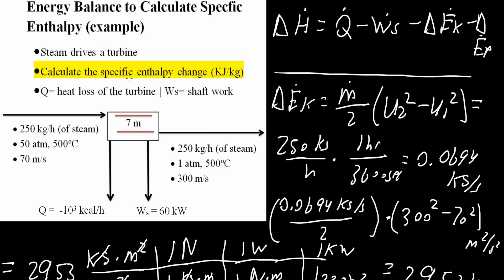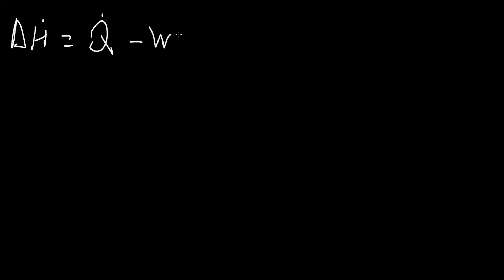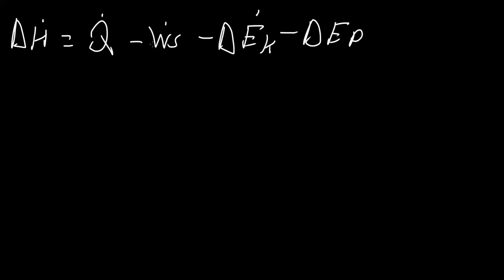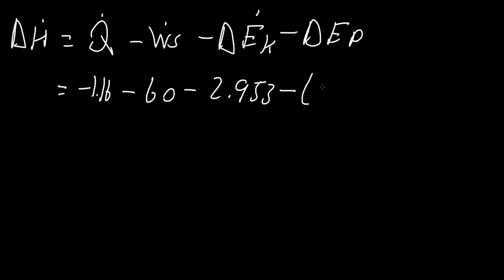We ultimately want to calculate the specific enthalpy change. Using the formula delta H equals Q minus WS minus delta EK minus delta EP, and setting this up with Q minus WS minus EK minus the change in potential energy, we get an answer in kilowatts. We had negative 1.16 minus 60 minus 2.953 minus (negative 0.00476), and we get negative 64.11 kilowatts.